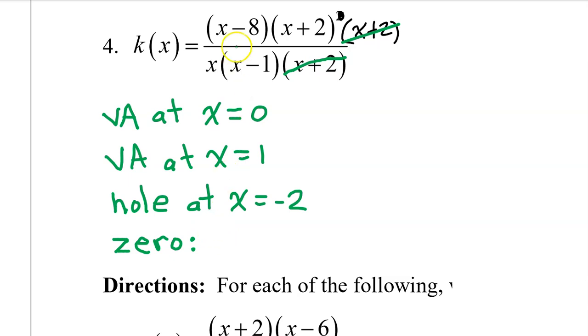Also, k(x) will have a zero at 8 because x minus 8 is only in the numerator.